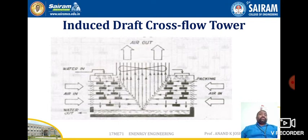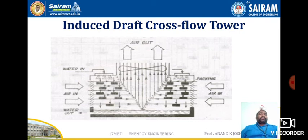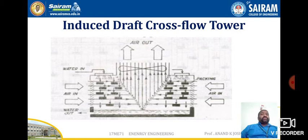The induced draft cross flow type tower provides horizontal airflow from both sides of the tower. Water falls in the form of small drops over a filling. The fan is centered at the top of the unit and draws air through cells paired to a suction chamber between the fan sections. The outstanding feature of this tower is lower air static pressure losses due to less resistance in the airflow.